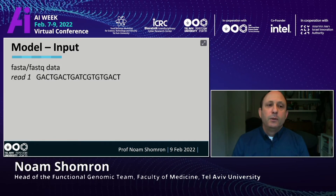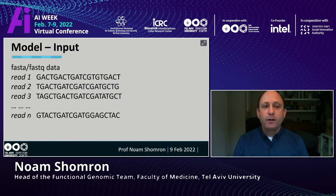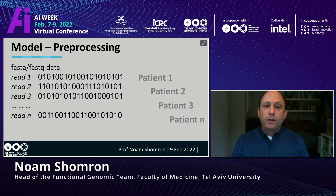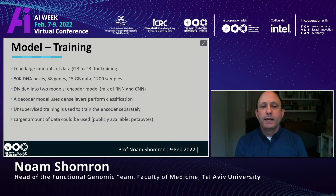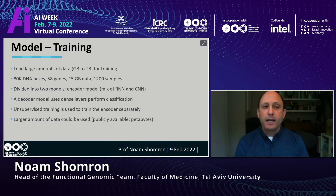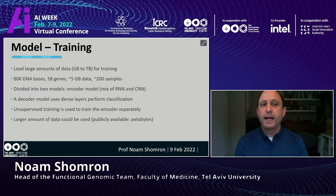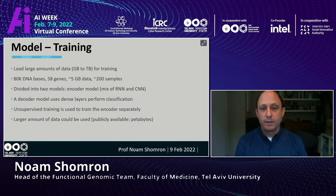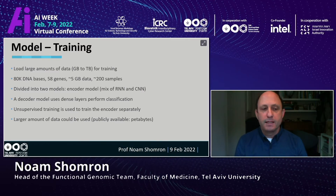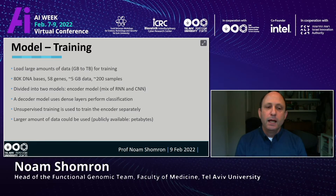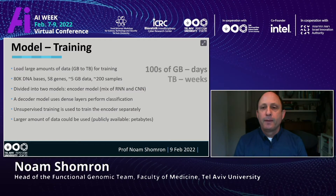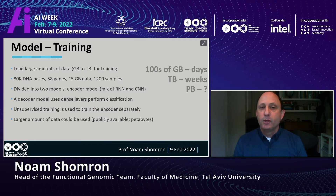How does it work? The model takes DNA reads as input — sequences represented by four letters for each patient. We turn it into binary code, zeros and ones, loading gigabytes to terabytes for training. We look at a discrete set in the DNA: 80,000 nucleotides including 58 genes out of 20,000 human genes — about five gigabytes per sample — with 200 cancer samples. It uses a decoder model with a dense layer for classification and unsupervised training for the encoder. Training on hundreds of gigabytes takes days; terabytes takes weeks; petabytes would take many months.